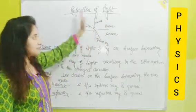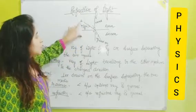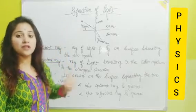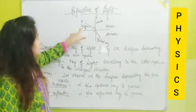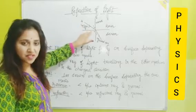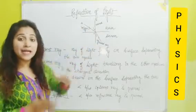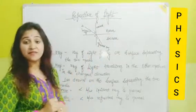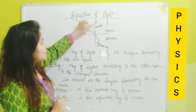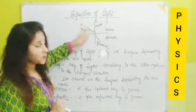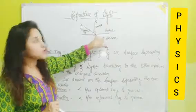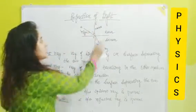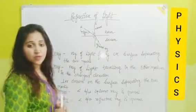You can see this Refraction of Light in the given figure. This is the Incident Ray — when a ray comes and falls on a surface, we call it Incident Ray. This Incident Ray is on the surface and after bending it becomes the Refracted Ray. This is your Rarer medium and this is your Denser medium.